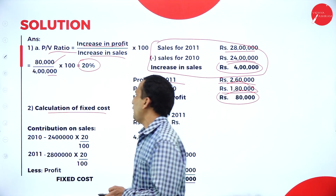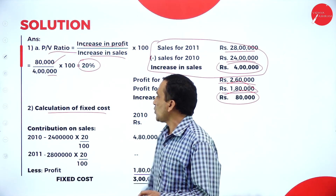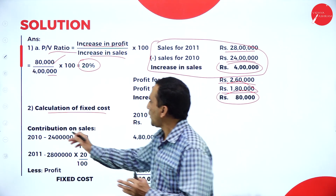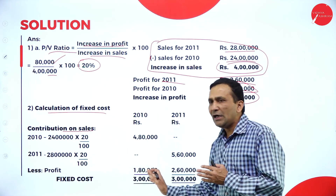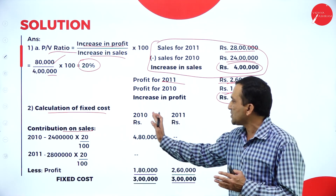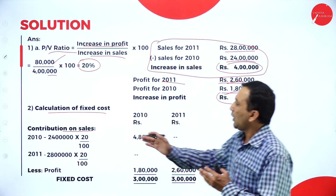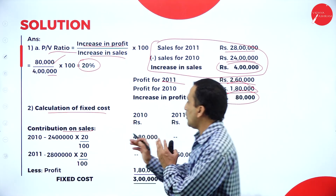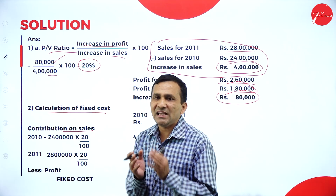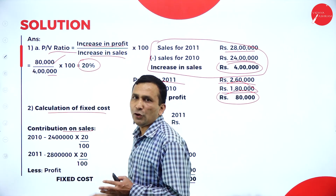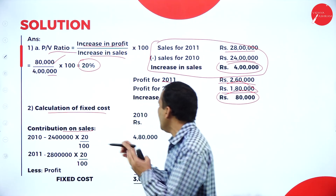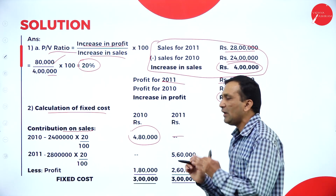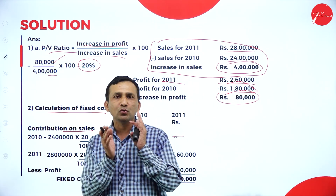Calculate the fixed cost. We find contribution based on sales. For 2010, sales are 24 lakhs multiplied by PV ratio 20%, giving contribution of 4,80,000. This figure is written in the 2010 column only, as the calculation applies to 2010.